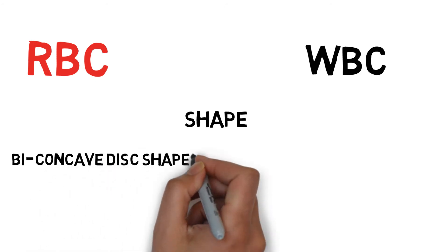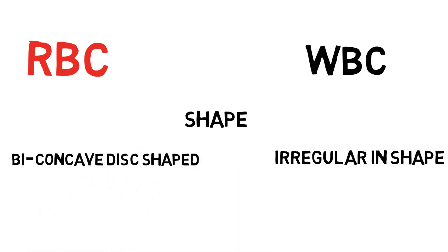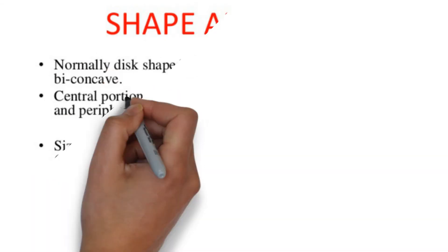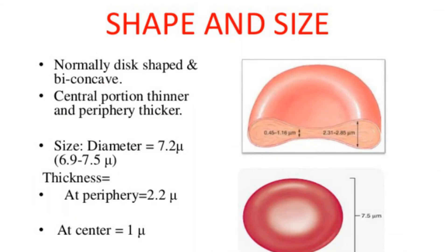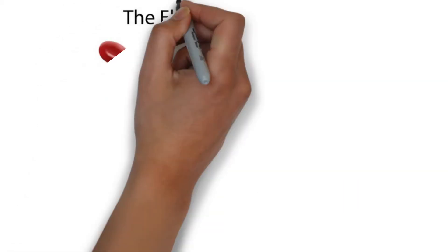The shape of an RBC is a biconcave disc shape. This shape gives it some mechanical and functional advantages. Take a look at this picture — you can see the central portion is thinner and the peripheral portion is thicker. Thickness at the periphery is 2.2 microns and at the central portion it is 1 micron.